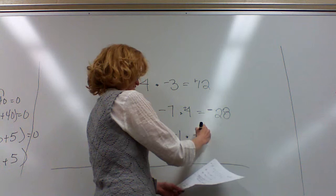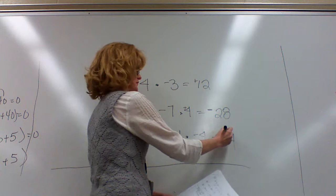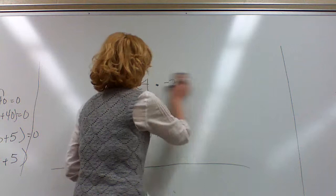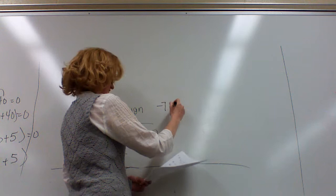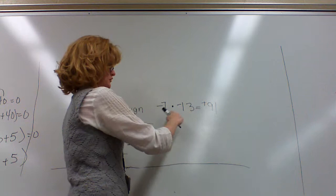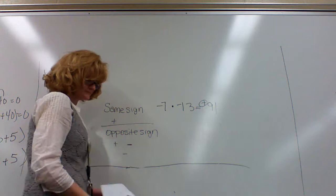Negative 1 times negative 4 equals 4. They're both negative, so it becomes a positive 4. Negative 7 times negative 13 equals a positive 91. You multiply the 2, but they are both negative, so it gets a positive sign.